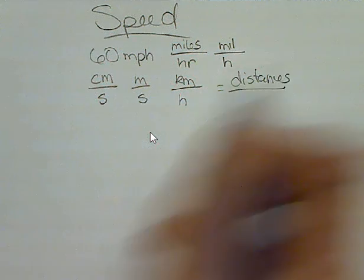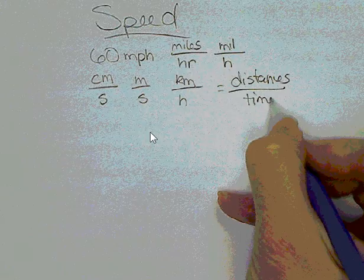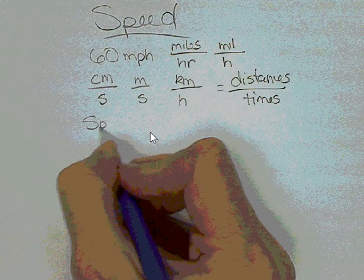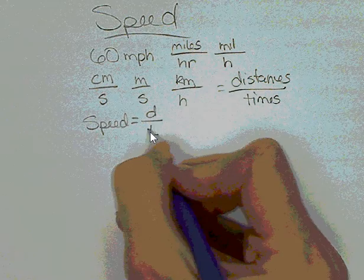And on the denominator, all those on the bottom, those are all times. Our formula for speed would be distance divided by time.